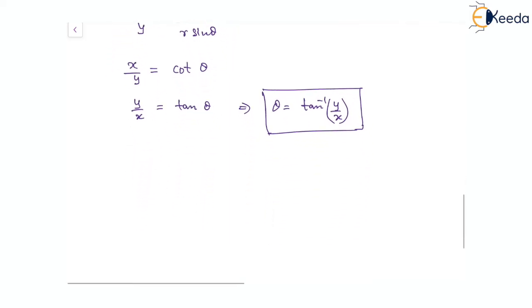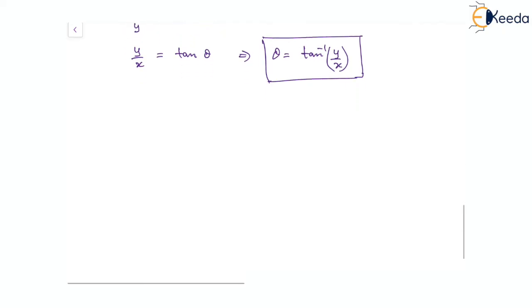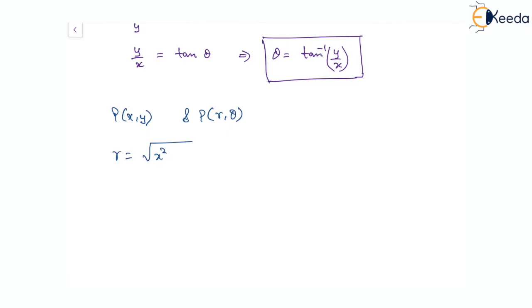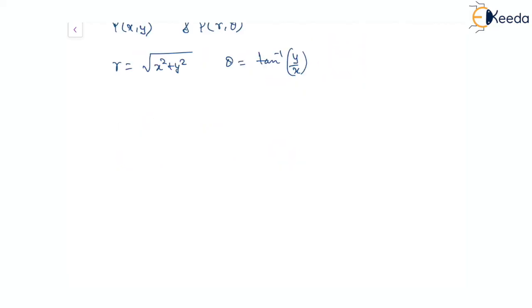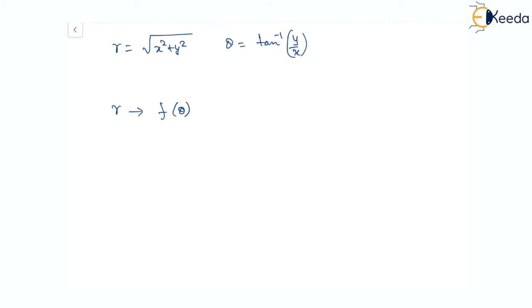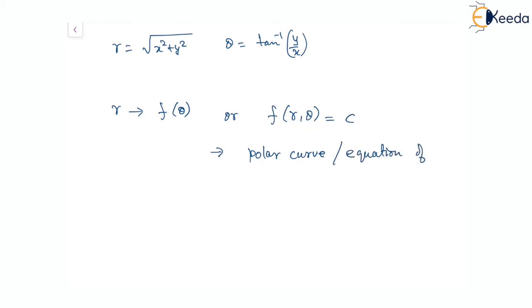So the relationship between rectangular coordinates (x, y) and polar coordinates (R, theta) is: R = √(x² + y²) and theta = tan⁻¹(y/x). Furthermore, R is a function of theta, and an equation of the form f(R, theta) = c is called the equation of the polar curve, or simply the polar curve equation.